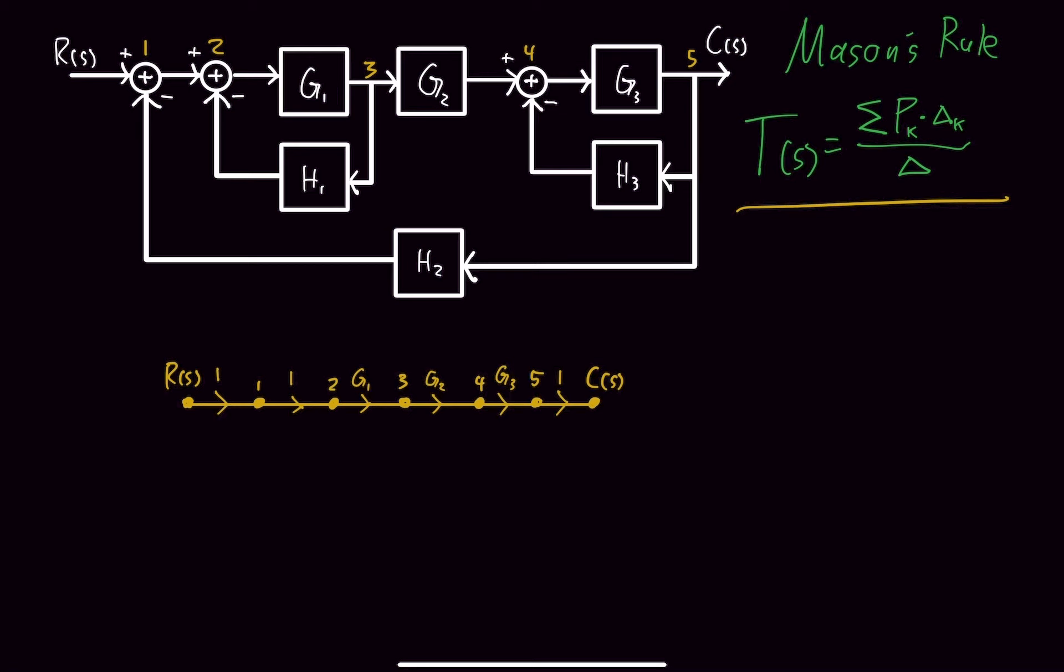So now I can start putting in my loops. So from 4 to 5, I'll put negative H3, and I'm getting that negative from here. From 3 to 2, I'll put negative H1. So this is our signal flow graph.